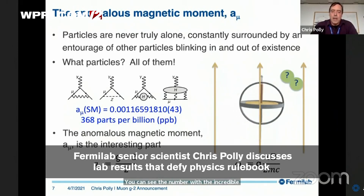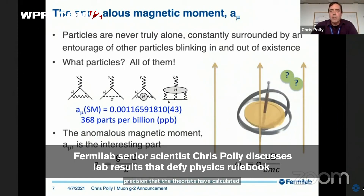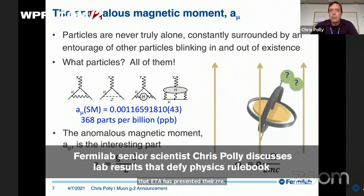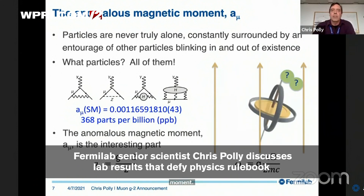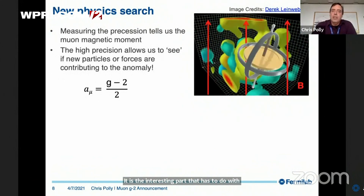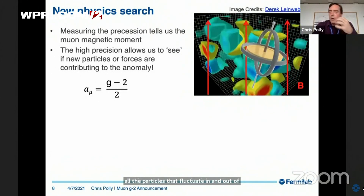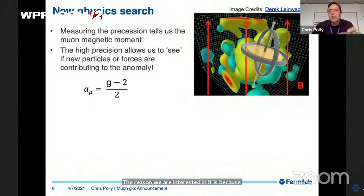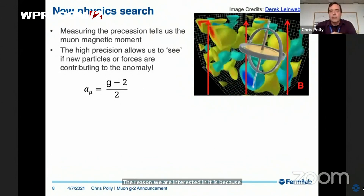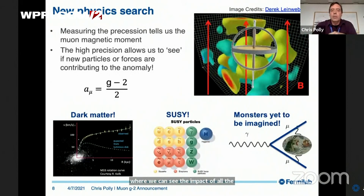We're interested in the anomalous part of the magnetic moment. It's historically been called that because it's the part where the g factor differs from two. It's the interesting part — the part that has to do with all the particles that fluctuate in and out of the vacuum. The reason we're interested in it is because it allows us basically a window into that universe where we can see the impact of all those fluctuating particles — not only the ones we know about, but also the ones we don't.